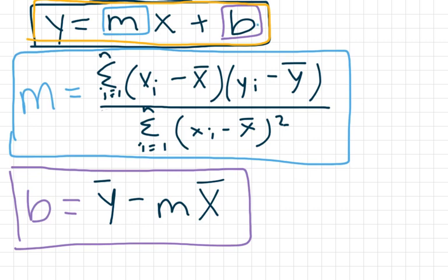To find b, we just solve for b by rearranging the equation. Instead of y equals mx plus b, we say b equals y minus mx. For the x and y values, we plug in the mean y value and the mean x value.